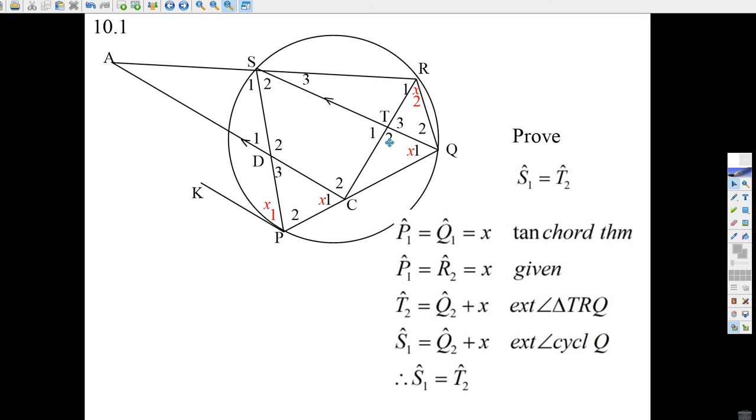Now we know that T2 is equal to Q2 plus x because it's the exterior angle of the triangle TRQ. Why I care about those two coming together is because S1 is the exterior angle of the cyclic quad. S1 equals Q2 plus Q1 plus this little x. Well, if T2 equals that because of the exterior angle of a triangle, and S1 equals Q2 plus x because of the exterior angle of the cyclic quad, then they have to be equal to each other.